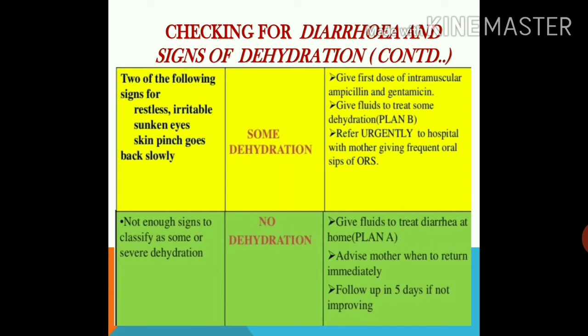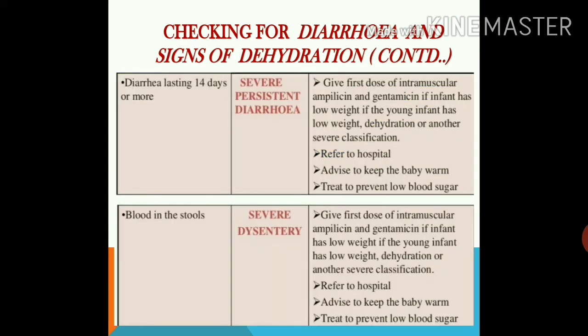If the infant does not have enough signs to classify as some or severe dehydration — no signs of dehydration — classify as green color coding with no dehydration. Treat at home using plan A, and advise the mother when to return immediately. If there is no improvement, schedule a follow-up.